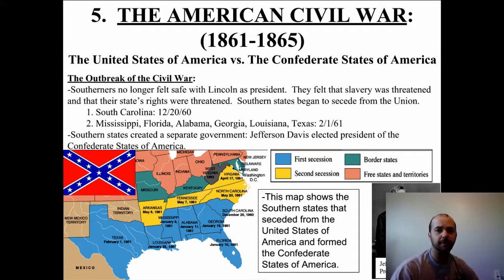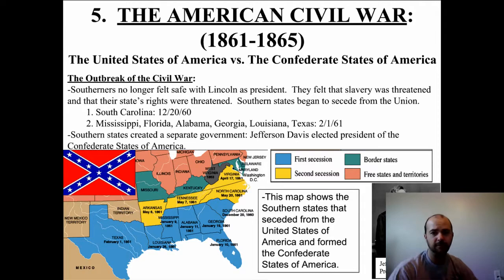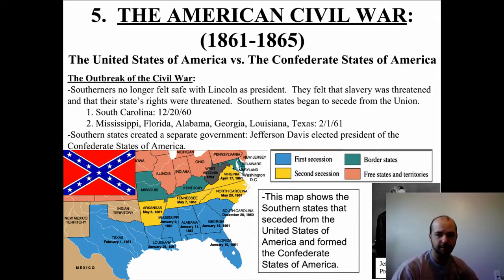It started with South Carolina on December 20th of 1860, and then it continued. If you look at the map, you can see that there were actually two rounds of secession. We have the Deep South states seceding in late 1860 and early 1861, and then the northern southern states — Virginia, North Carolina, Tennessee, Arkansas — they secede later on in May.